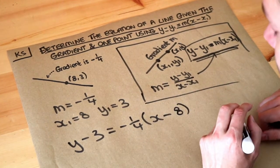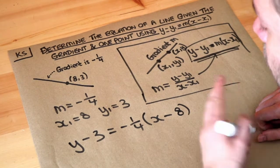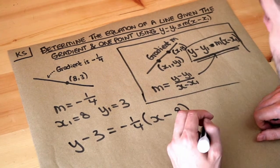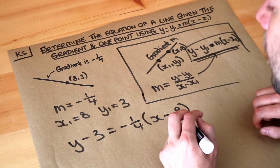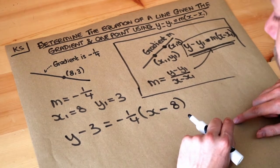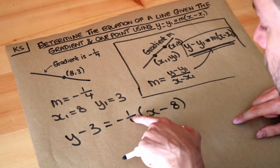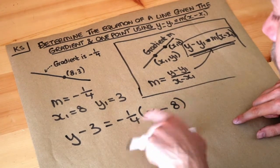Now the question could ask us to put this in a particular form, so it might be that we don't want to have any fractions in our equation, we just want whole numbers. So if that was to happen, all we need to do is we don't like this fraction here, so what we do is we multiply everything by the denominator, the 4.